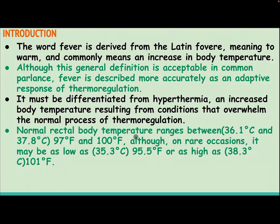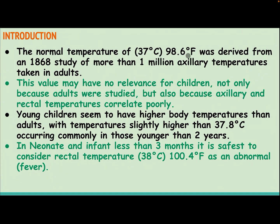Normal rectal body temperature ranges between 36.1°C and 37.8°C, although on rare occasions it may be as low as 35.3°C or as high as 38.3°C. The normal temperature of 37°C was derived from an 1868 study of more than one million axillary temperatures taken in adults. This value may have no relevance for children, not only because adult data were studied, but also because axillary and rectal temperatures correlate poorly.